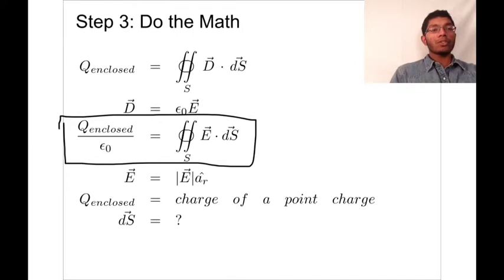And we also know that the electric field goes out radially in all directions. And that's just some magnitude. Also, we know that the q enclosed is just the charge of a point charge. We can just represent that with q. So the only thing we're missing right now is ds.